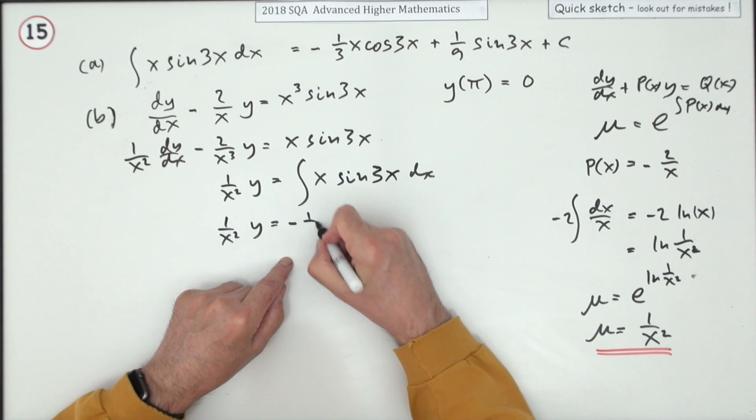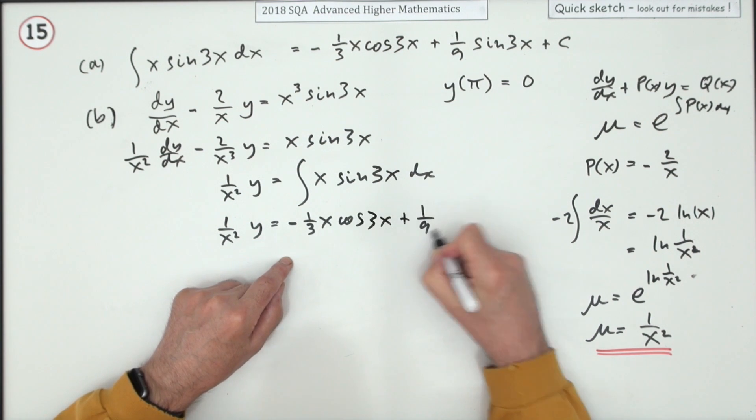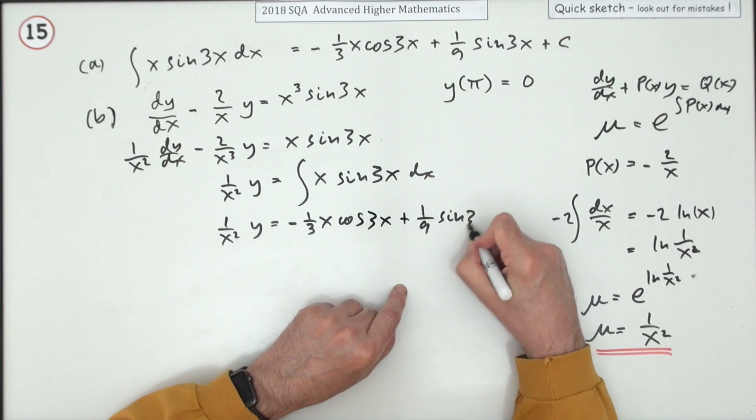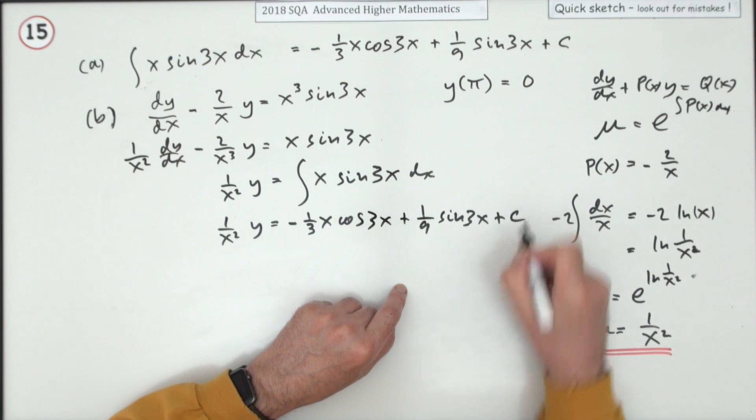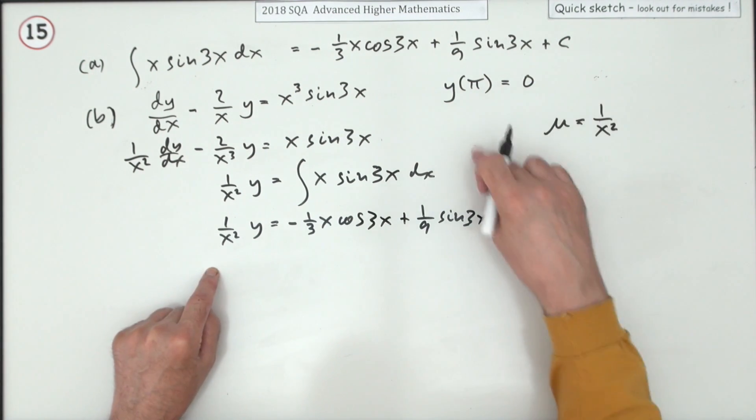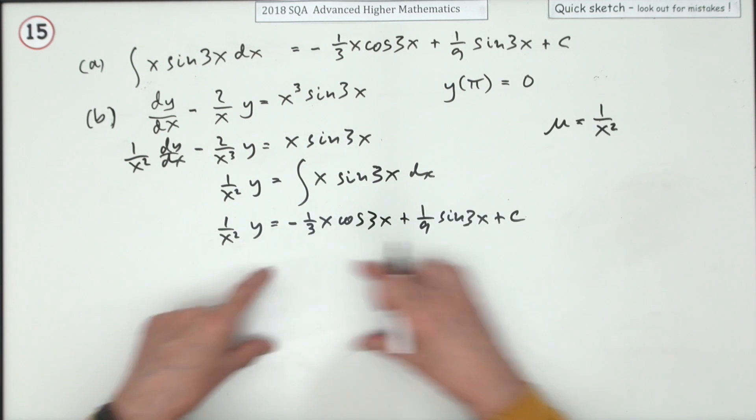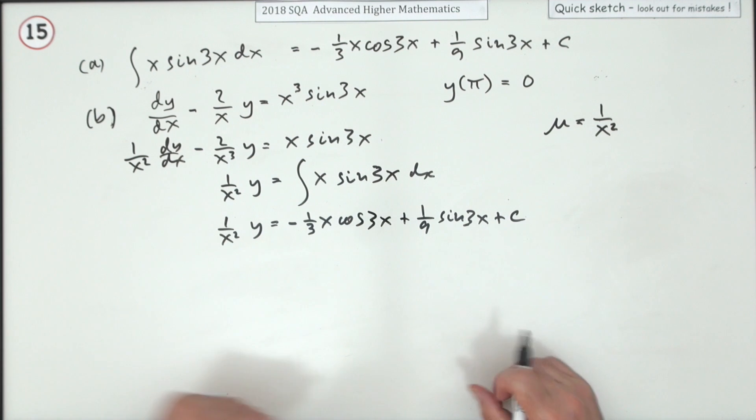And you know what that comes to. There it all is: negative 1 third of x cos 3x plus 1 ninth of sine 3x, but don't forget there is a plus c. Push that up out of the way there because now that I have to find c, I don't really want to have it in here messing up the flow of the solution.